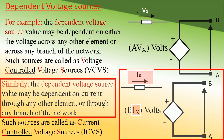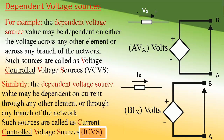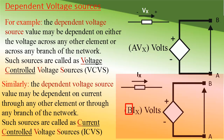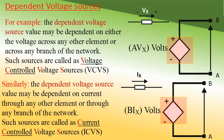Similarly, the dependent voltage source value may depend on the current through any other element or branch of a network. Such sources are called current controlled voltage sources (CCVS), designated as Ic, φs. In the figure, Ix is the current through any other branch or element, and B is a constant; this source delivers B×Ix volts. Note that all independent sources are represented by a circle, whereas dependent sources are represented by a rhombus as shown in the figure.